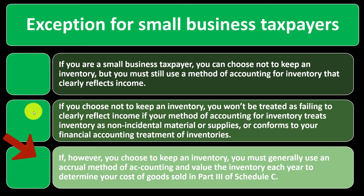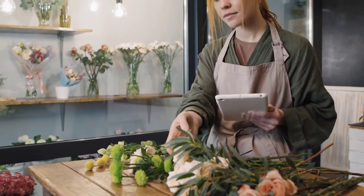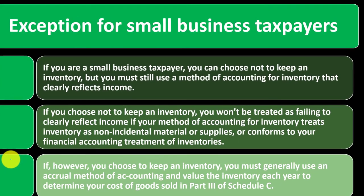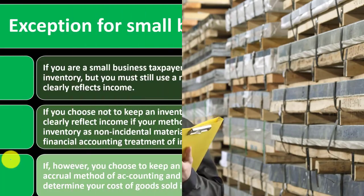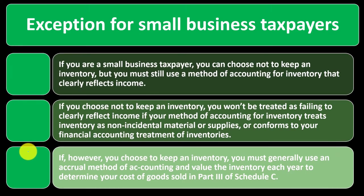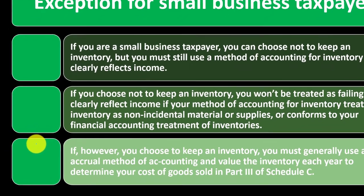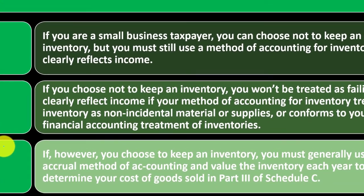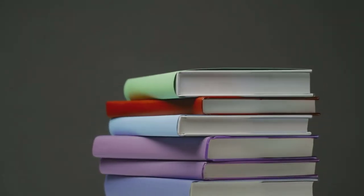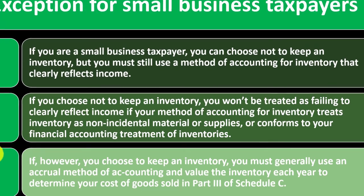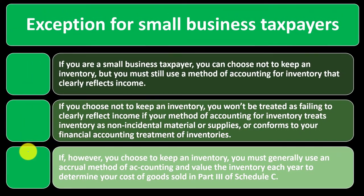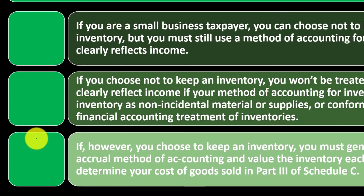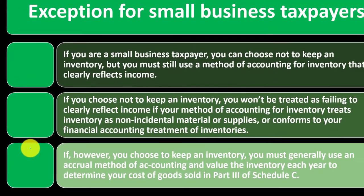If, however, you choose to keep an inventory, you must generally use an accrual method of accounting and value the inventory each year to determine your cost of goods sold in Part 3 of Schedule C. Your inventory may be small, but be careful — if inventory gets larger and significant to the point where you're tracking it in your bookkeeping, you would want your bookkeeping to mirror what's on the tax return. You would then have to request that the IRS allow you to switch methods, which they would probably grant for switching from cash to accrual, but it's still kind of a pain. So pick a method that mirrors your bookkeeping, keeping the exceptions in mind, and also thinking ahead to what your bookkeeping might be in the future.